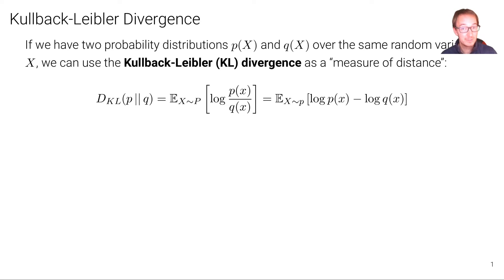And this is defined as the expectation of the logarithm of p(x) over q(x). So it's very similar to how the Shannon entropy was defined, except that now we have two distributions, in particular the ratio of two distributions. And by the laws of the logarithm, we can also write this as the expectation of the logarithm of p(x) minus the logarithm of q(x).